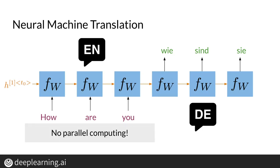As you can see here, you have to go through every word in your input, starting with the first word, followed by the second word, one after another, in a sequential manner in order to start the translation, which is done in a sequential way too. For that reason, there is not much room for parallel computations here. The more words you have in the input sequence, the more time it will take to process that sentence.